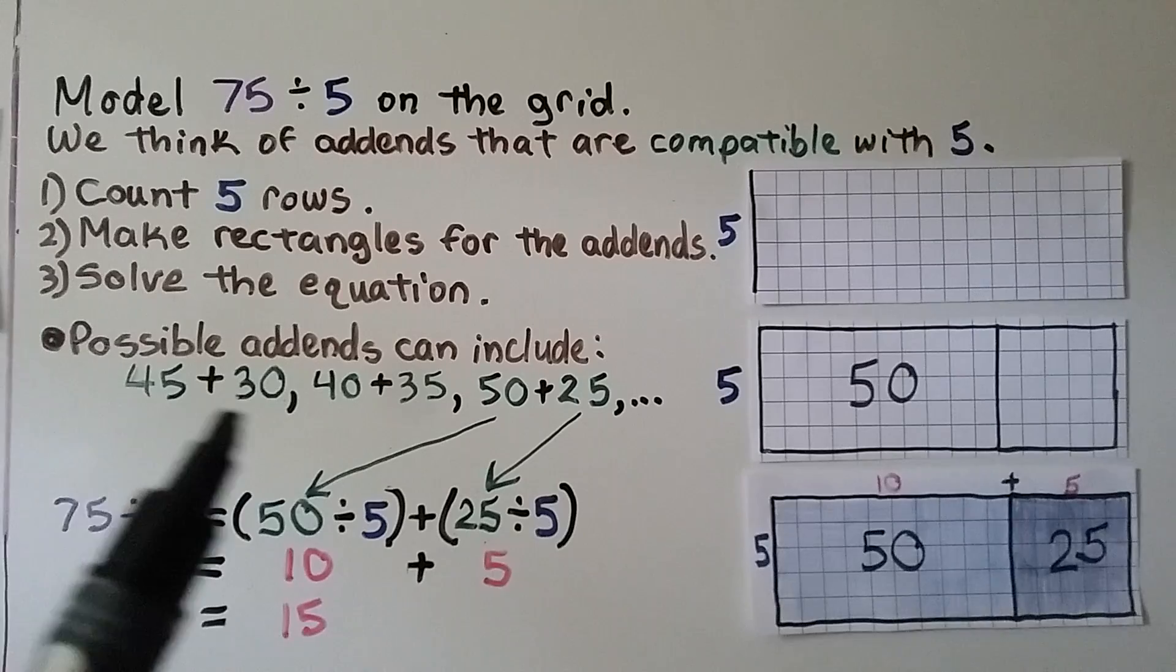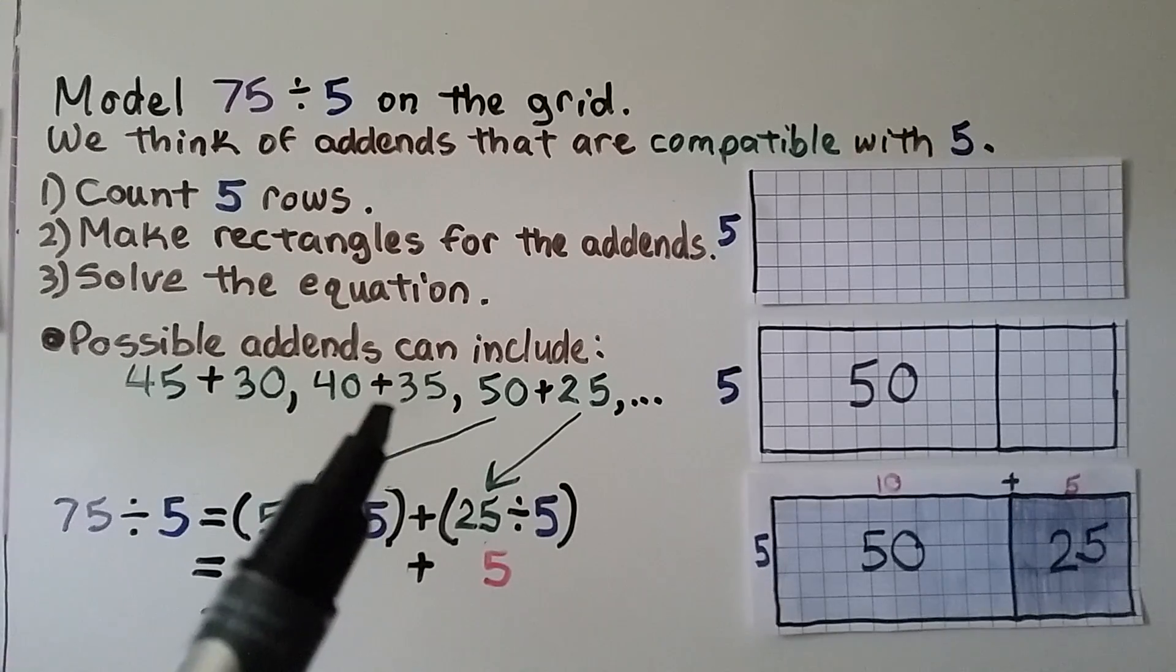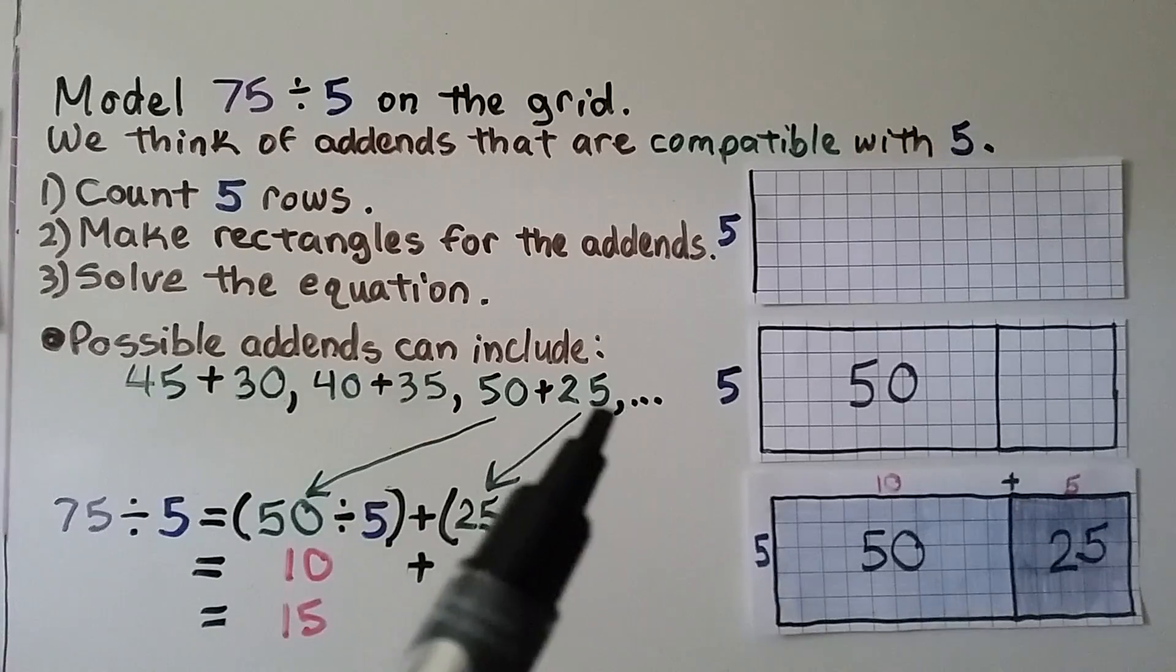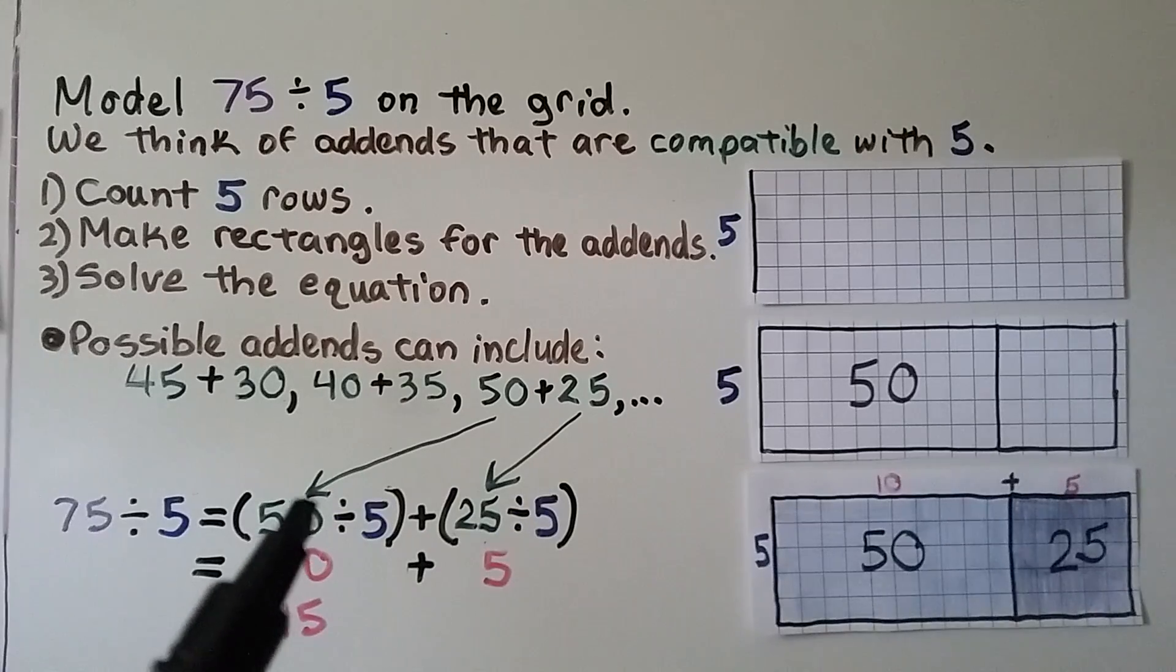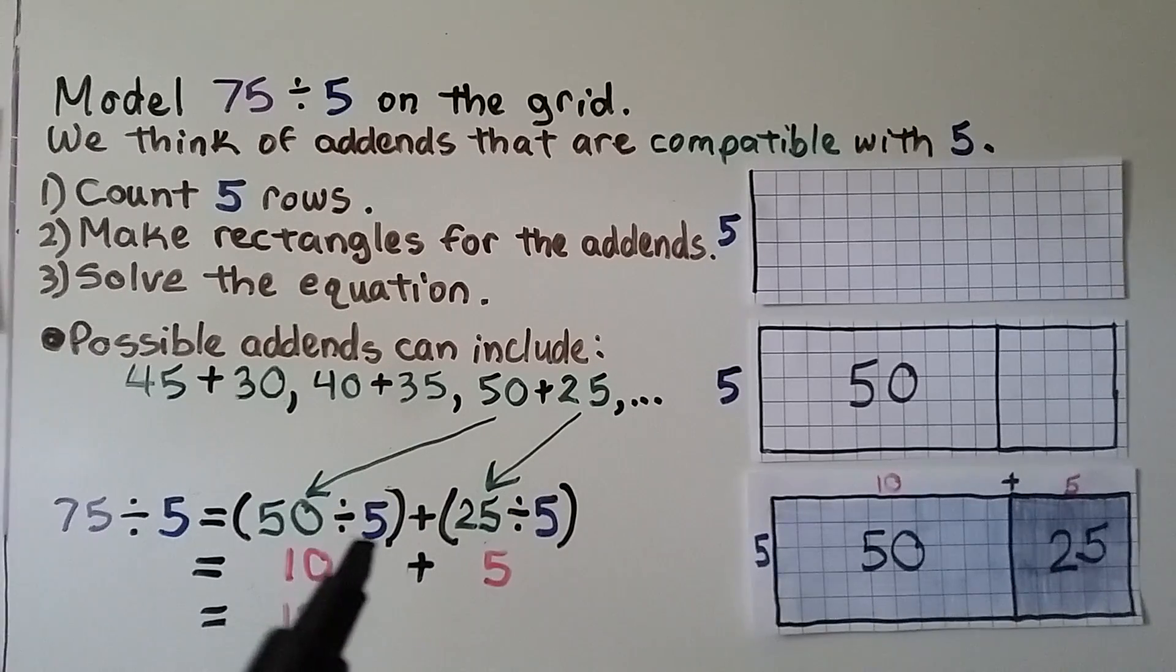We make rectangles for the addends. So the possible addends we could use would be 45 plus 30. Those are compatible with 5. Or 40 plus 35. We could do 50 plus 25. So that's the one I decided to use. So we have 50 divided by 5 plus 25 divided by 5.